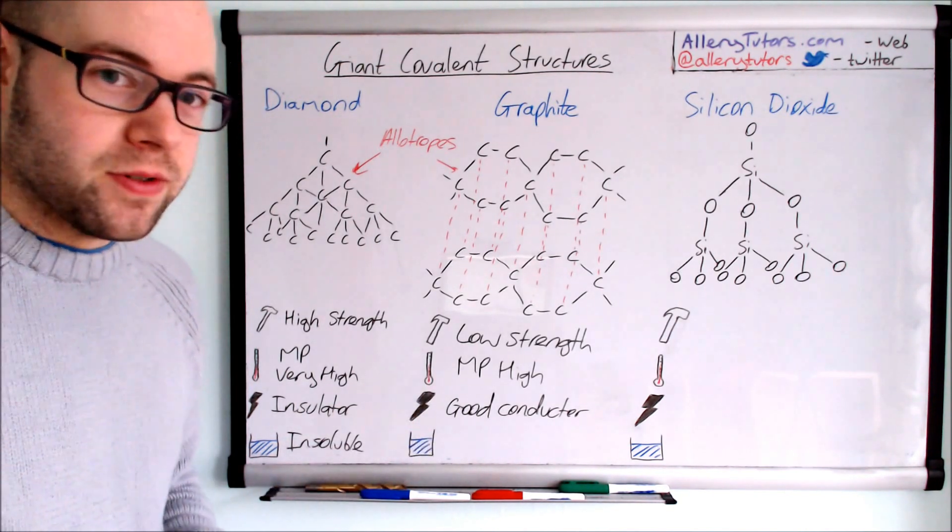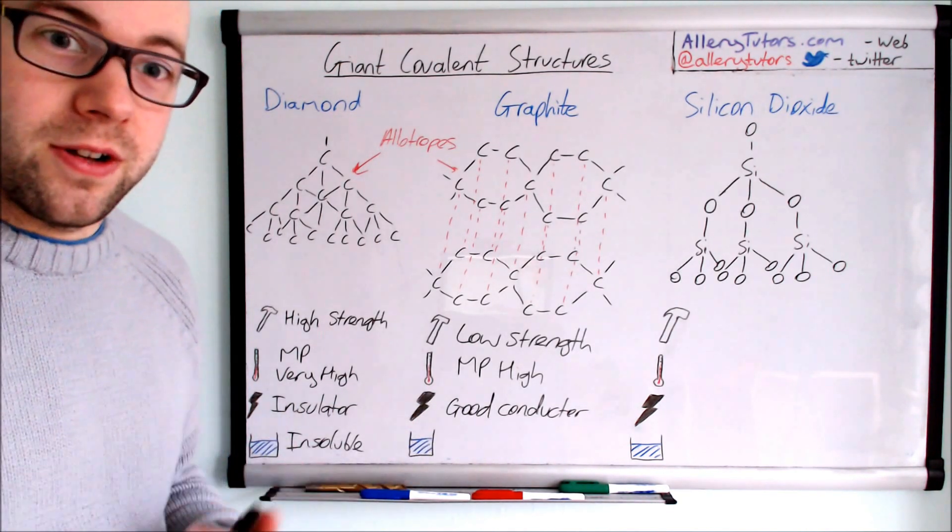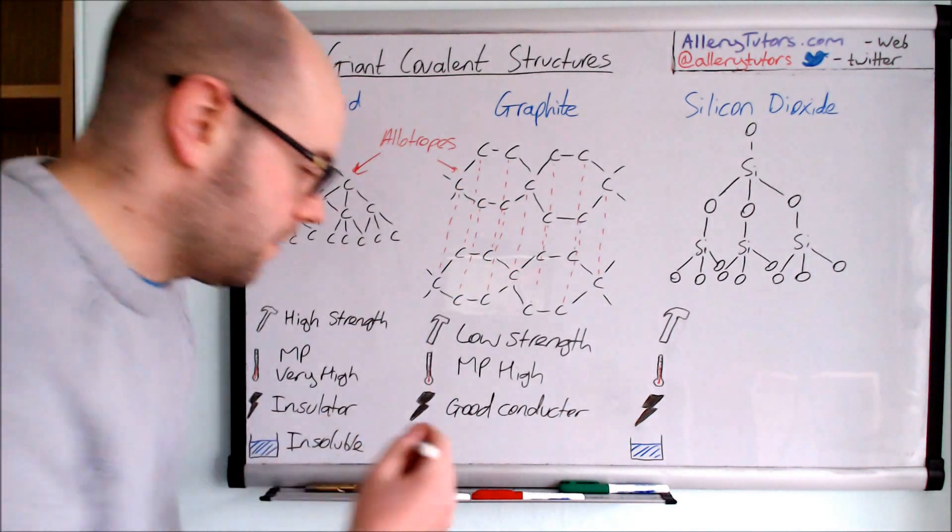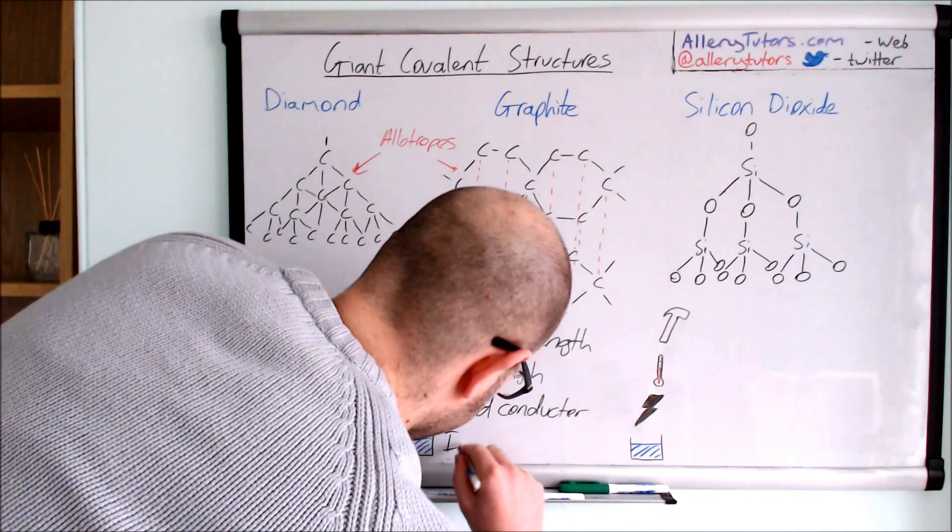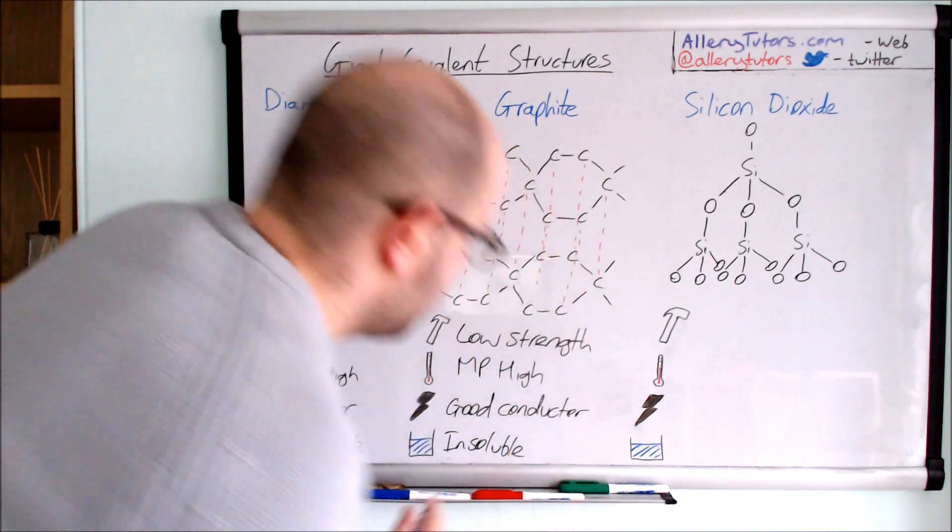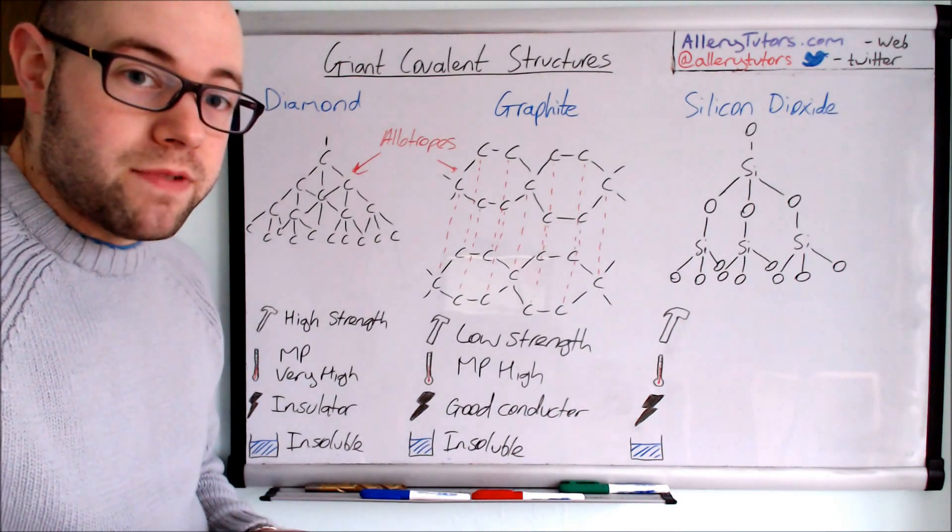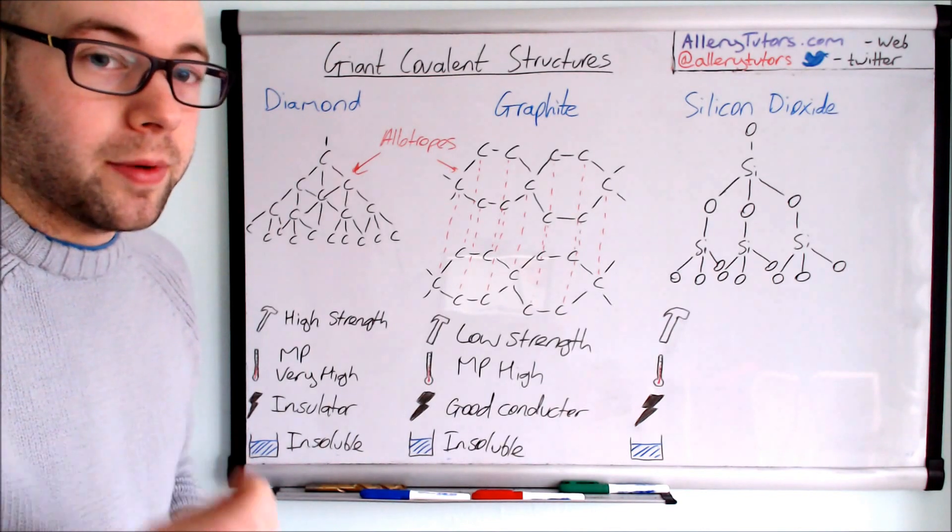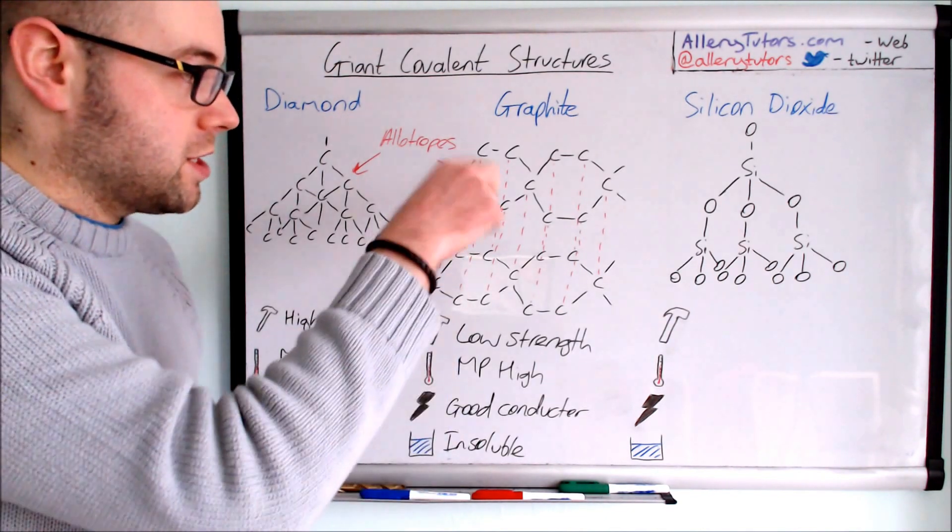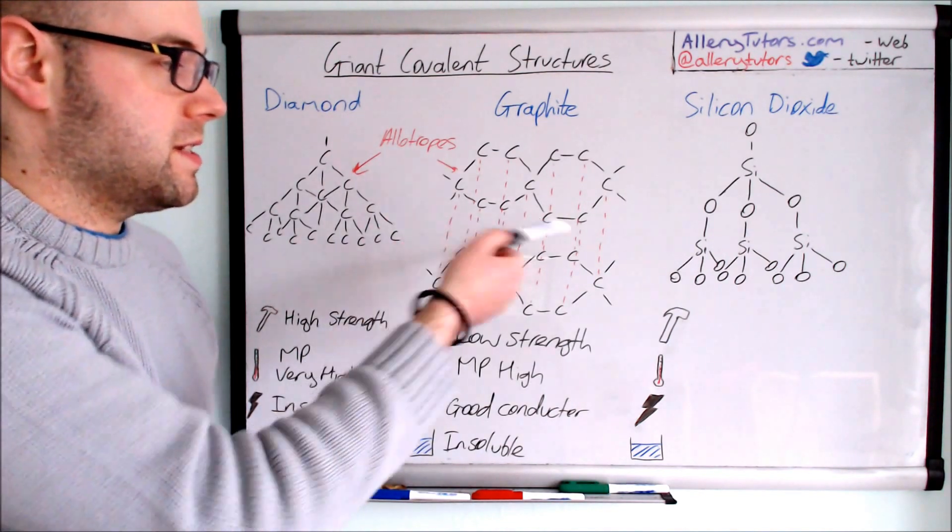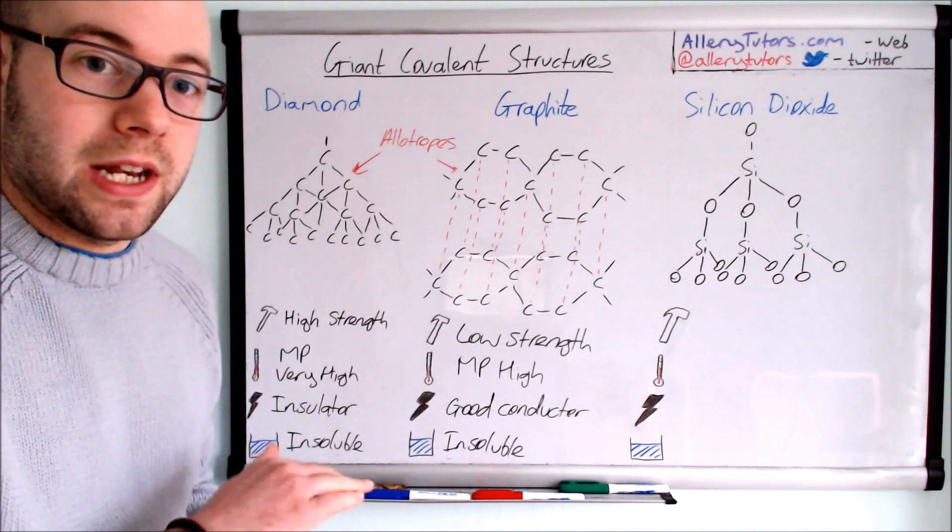Solubility - these things are insoluble. If you've ever tried to put a pencil in water, it doesn't dissolve, so graphite is insoluble. We don't have any polarity here, so it's insoluble. A key point to note is that every carbon in here is only bonded three times.